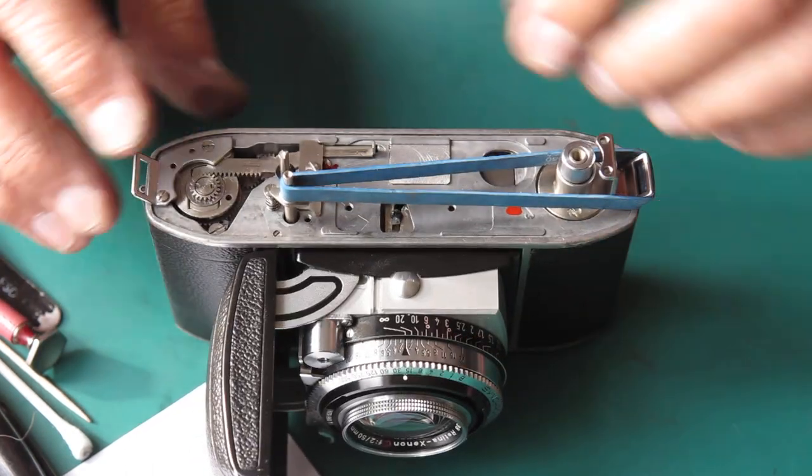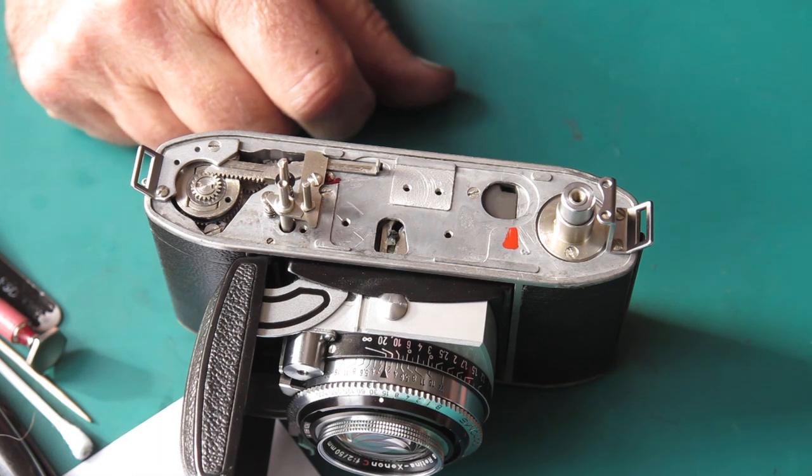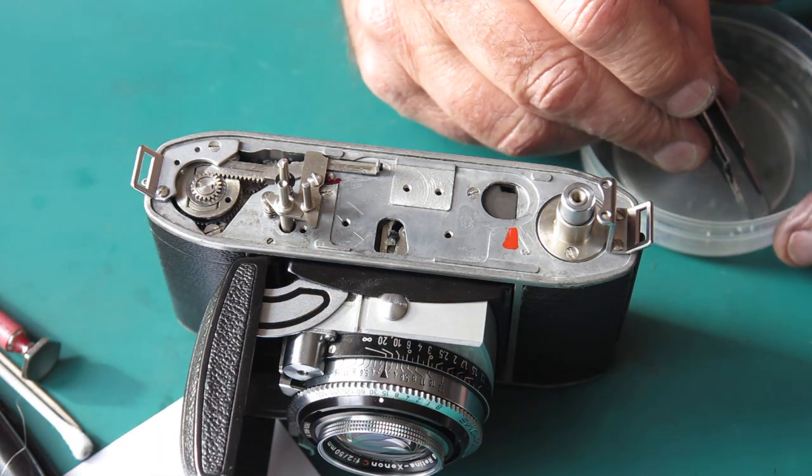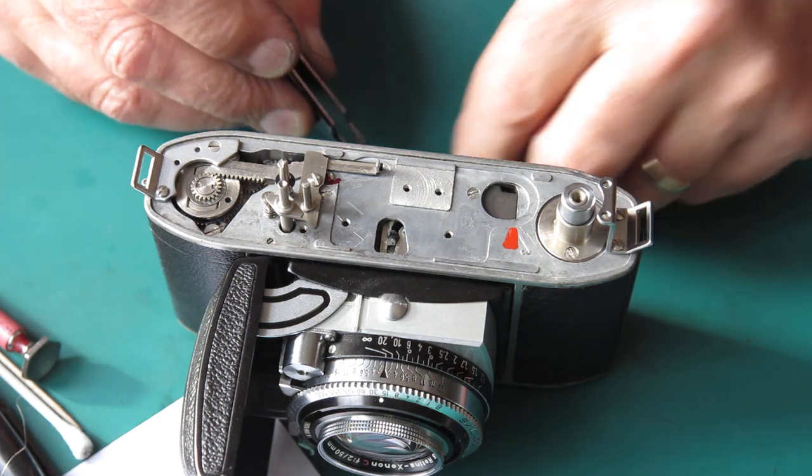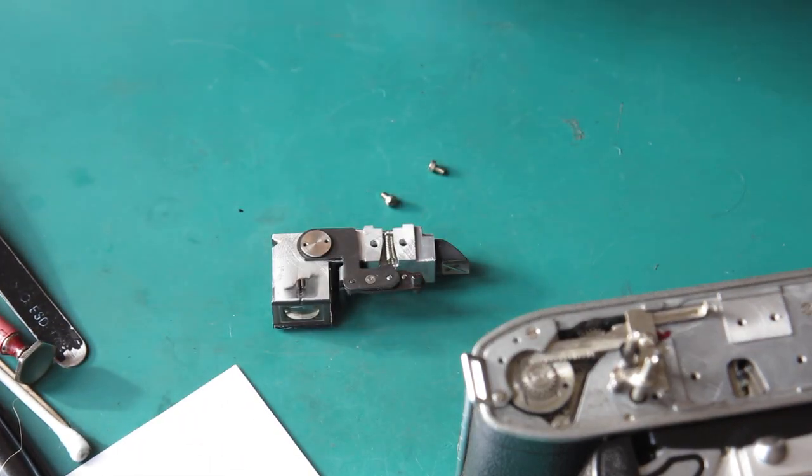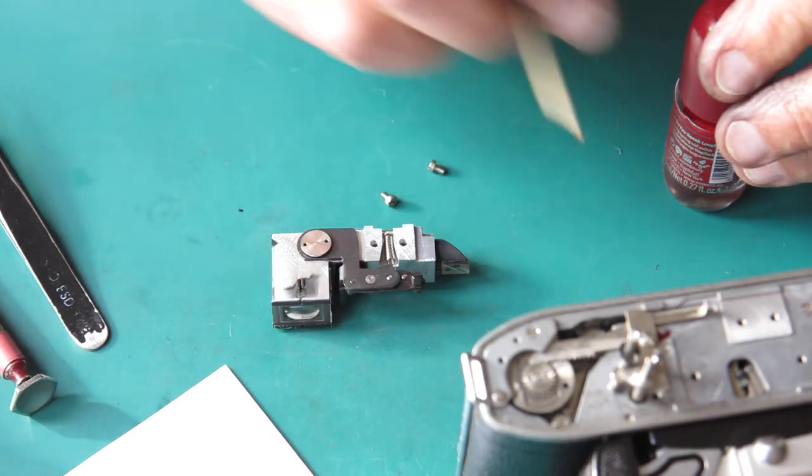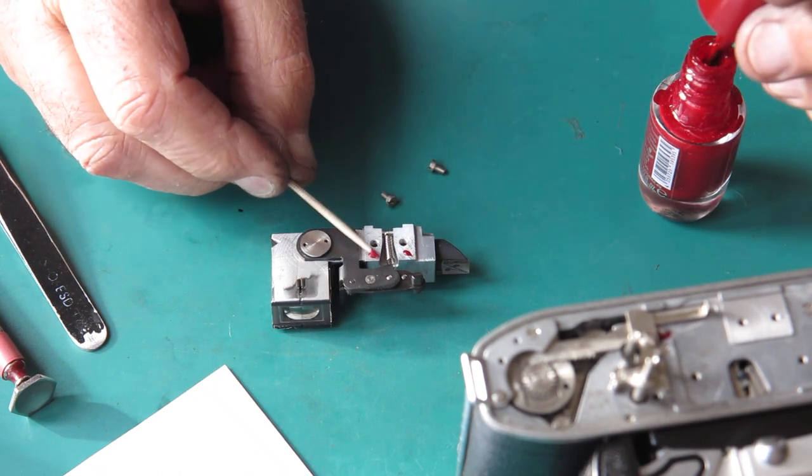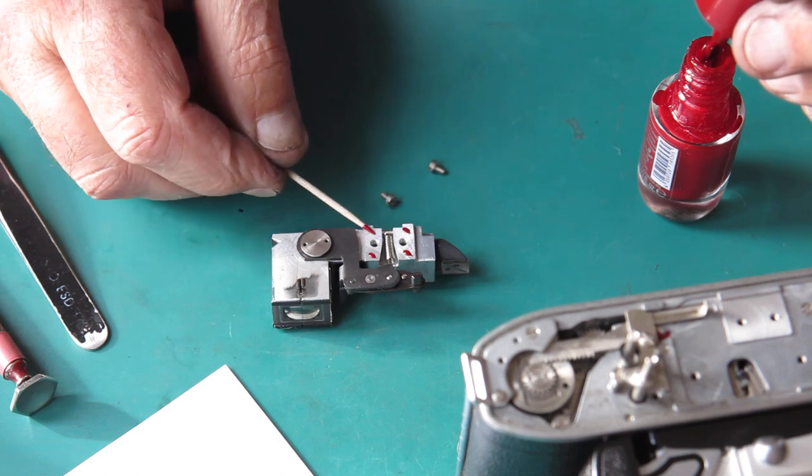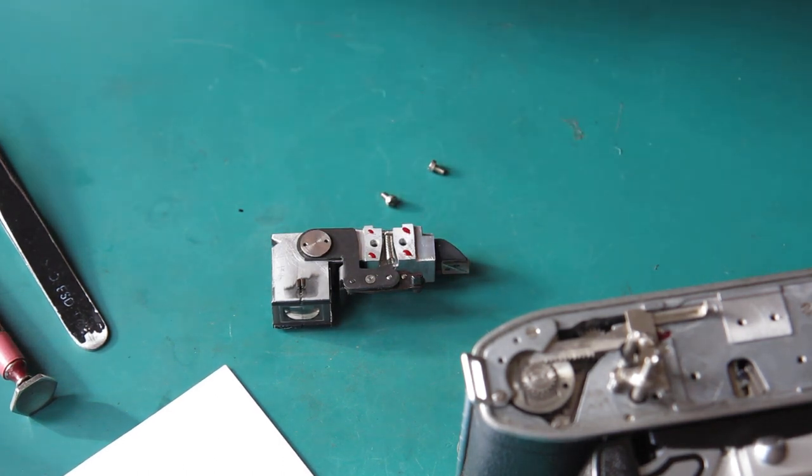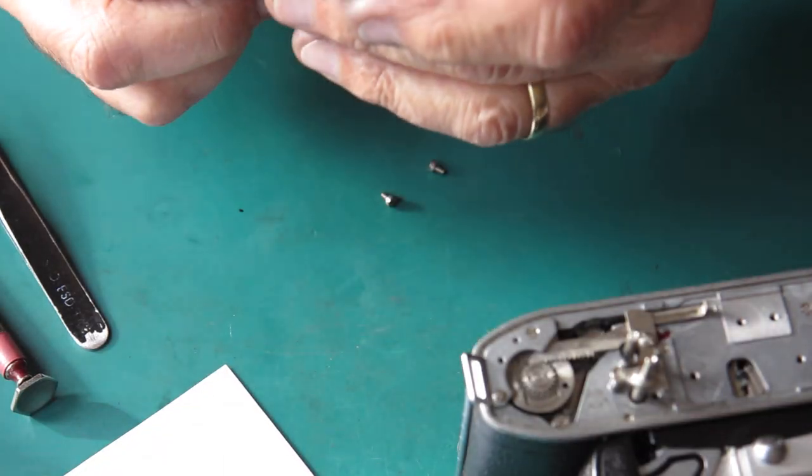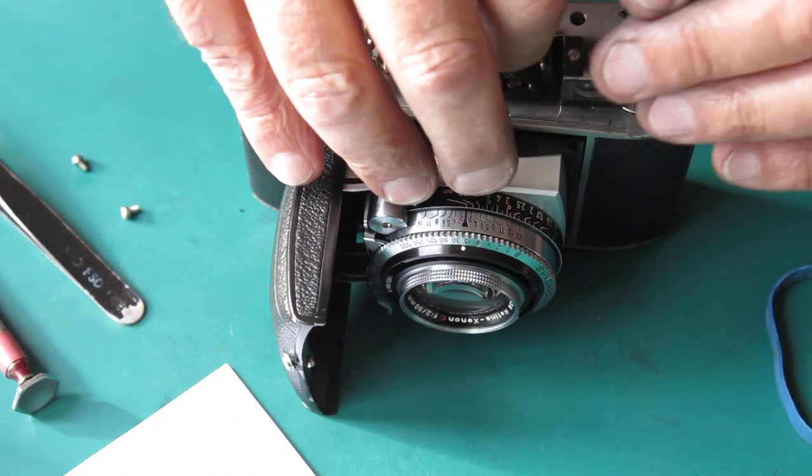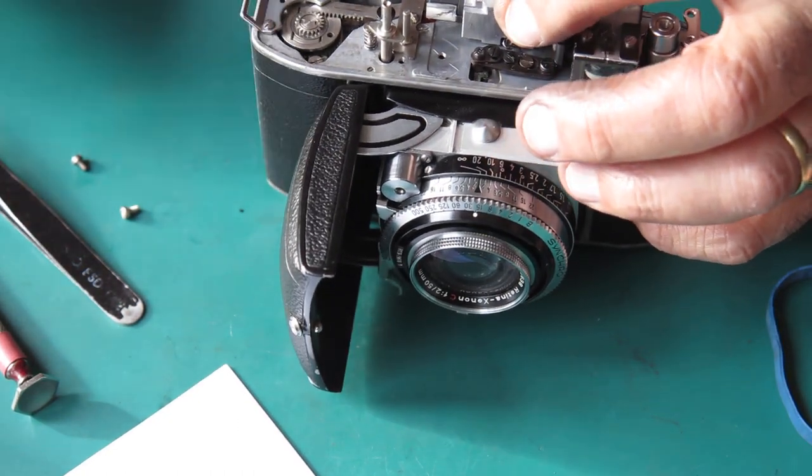So that's that part. All right. Now I can put the rangefinder on since we know the focus is good. The rangefinder can go on. I have two screws that would hold the rangefinder in place. And here we have the rangefinder. Now I'm going to put a couple of dobs of lacquer on here so the rangefinder won't shift position if the camera gets thumped. And cameras are always getting thumped because people are never as careful as they might be.